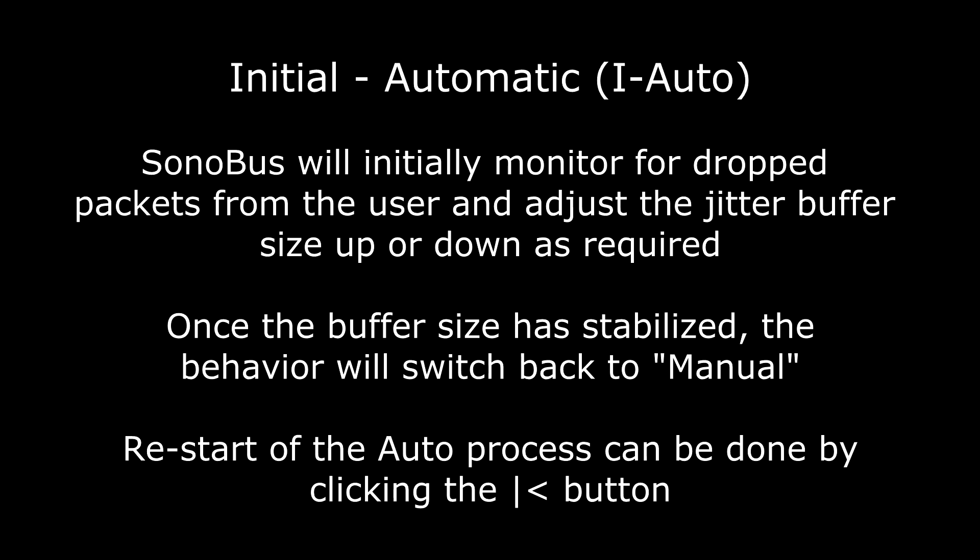The third mode is called initial automatic. In this mode, Sonobus will initially behave like the automatic mode and come up with a buffer size that eliminates any dropouts from a player in the session. But once the buffer size has stabilized, it will revert to manual mode and no longer make any changes to the buffer size. If you notice that the dropout conditions for a player have improved, you can click the button to the right of the jitter buffer display area for each player to restart the initial automatic process.